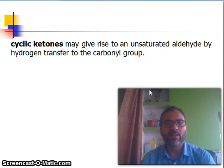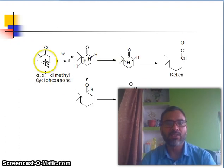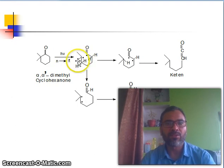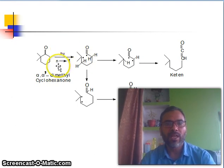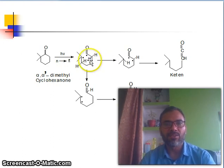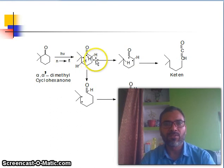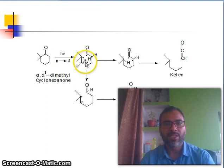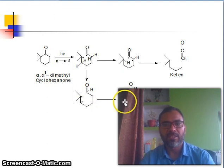Now, a cyclic ketone may give rise to an unsaturated aldehyde by hydrogen transfer to the carbonyl group. Look at this molecule — here are the alpha hydrogens, and here is the alpha carbon without an alpha hydrogen. It undergoes light excitation and n→π* transitions forming a di-radical. The alpha hydrogen transfers to the carbonyl, forming radicals that combine to give a ketene, or the hydrogen migrates to form an alkyne. So this product is the aldehyde and this is the ketene, both possible in the presence of light.